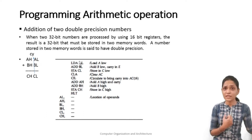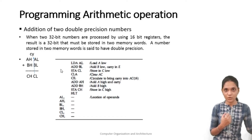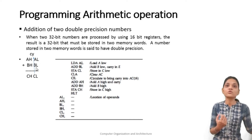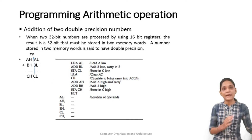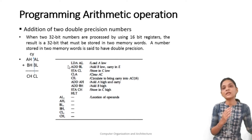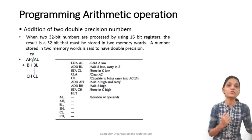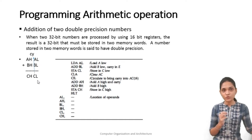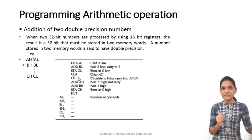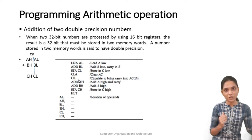In the first instruction the content of AL location is loaded into the accumulator. In the second we add the content BL using the instruction ADD BL. Then we store this result using STA CL, which stores the content to the CL location. After that we have to bring the carry into the accumulator. First we have to clear the accumulator because at this time the accumulator contains the content of CL. So we clear the accumulator using the instruction CLA.